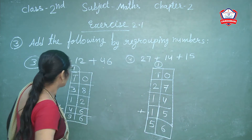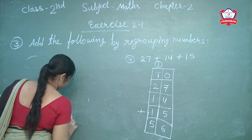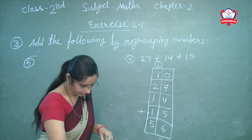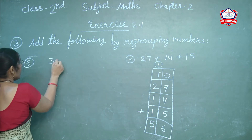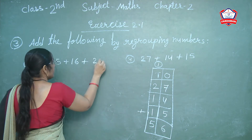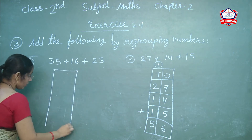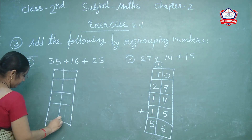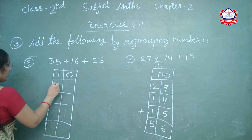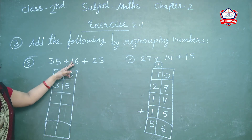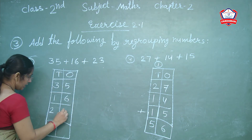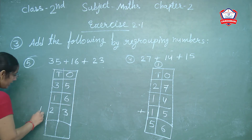Next, question number 5: 35 plus 16 plus 23. Let's draw the column — tens and ones. First digit is 35 — write 35. Next is 16 — write 16. Next is 23 — write 23. Write the plus symbol.